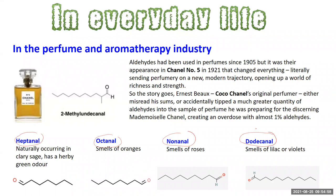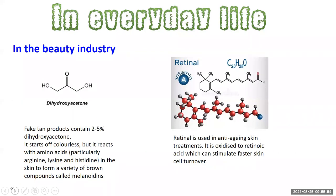A really interesting story is the development of Chanel No. 5. Aldehydes had been used in perfumes since 1905, but Chanel No. 5 released in 1921 truly brought aldehydes onto the scene. The story goes that Coco Chanel's perfumer accidentally added too much aldehyde — almost one percent — to a sample being prepared for Mademoiselle Chanel's examination. It was a total mistake; she loved it. The rest is history, and she named it after vial number five.